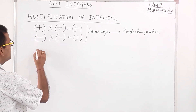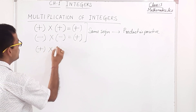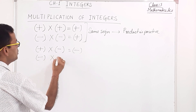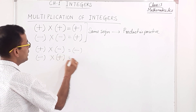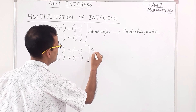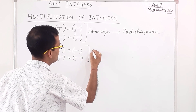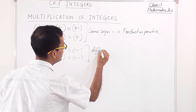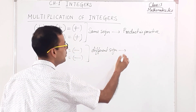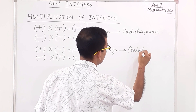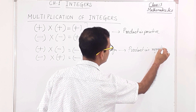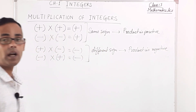Now for different signs: positive into negative gives negative, and negative into positive also gives negative. That means if the signs are different, the product is negative.